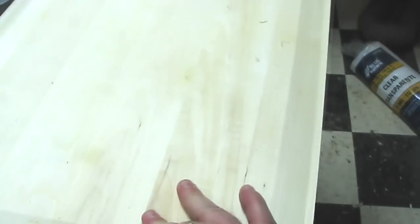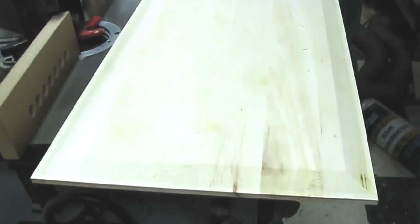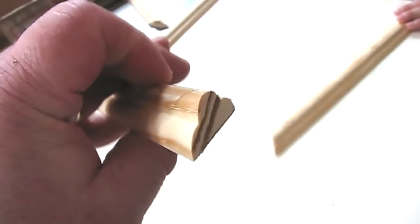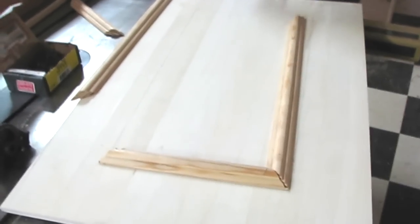All right. Now we're going to put a sort of a beaded panel on the back of it. So what we're going to do is take some little screen molding or beaded molding, whatever you want to call it, and make a panel here.